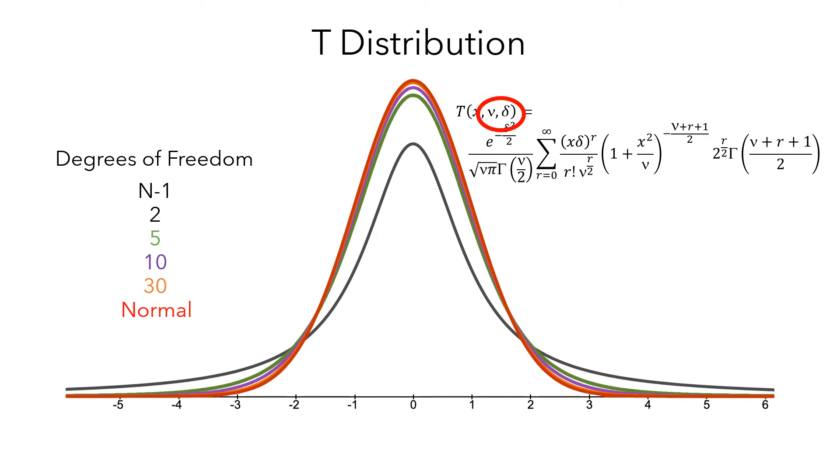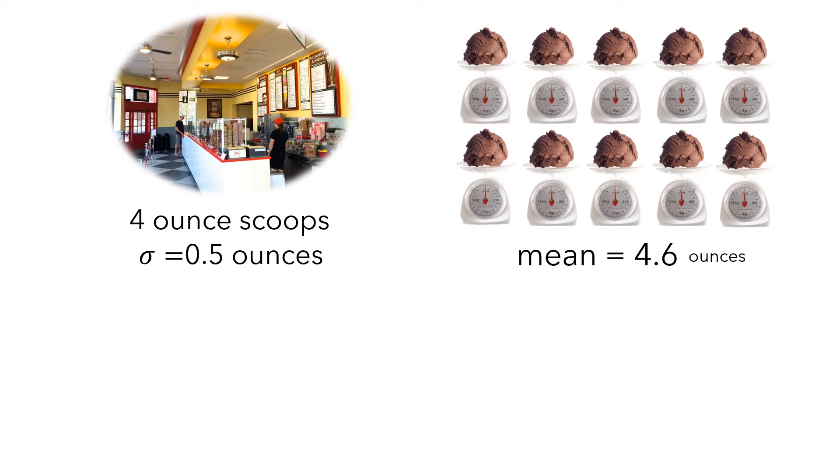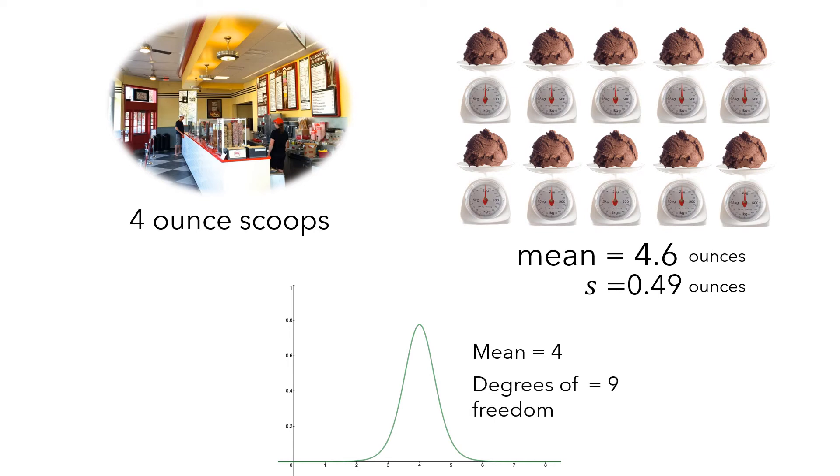So the t-distribution helps you work with smaller samples when you don't know the population standard deviation. So if we go back to the ice cream scoop example, we don't need to know the population standard deviation, we can just work with the sample standard deviation. And we would use a t-distribution with a mean of 4 ounces and 9 degrees of freedom. And our statistical software could use this to compute the p-value.